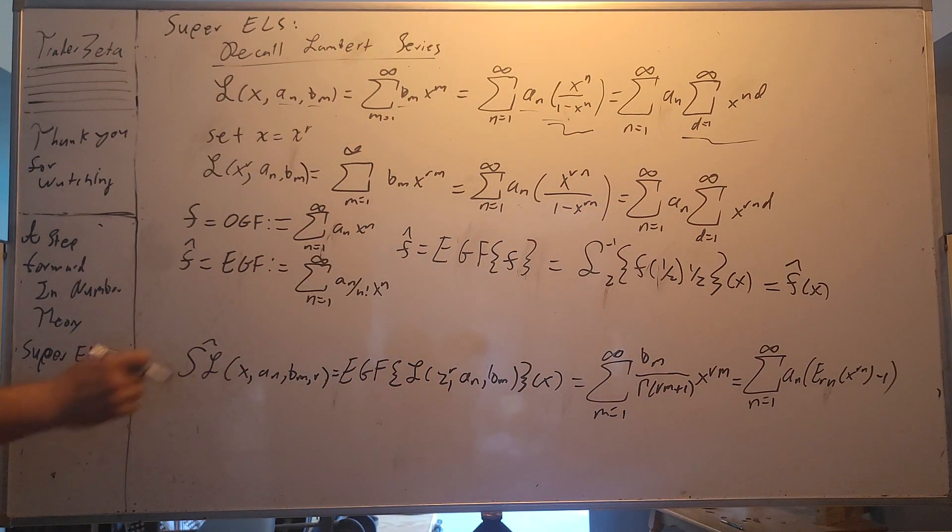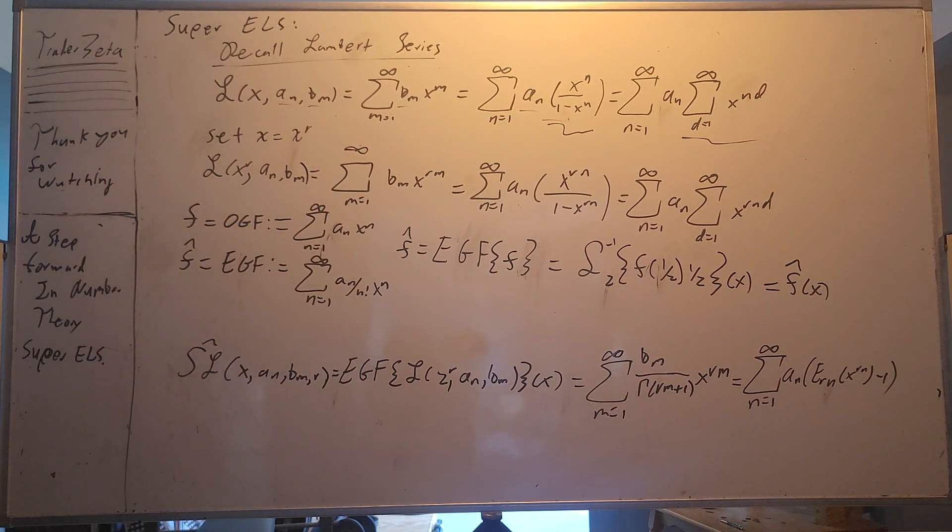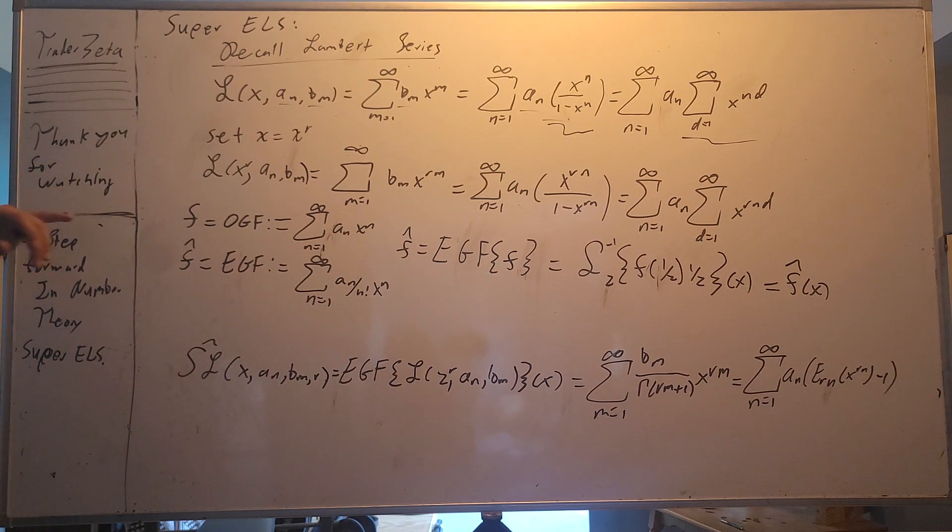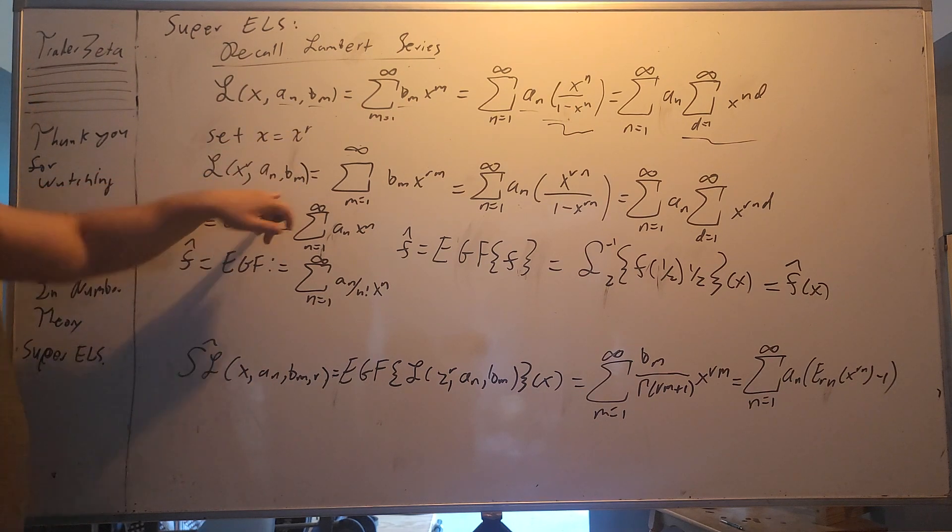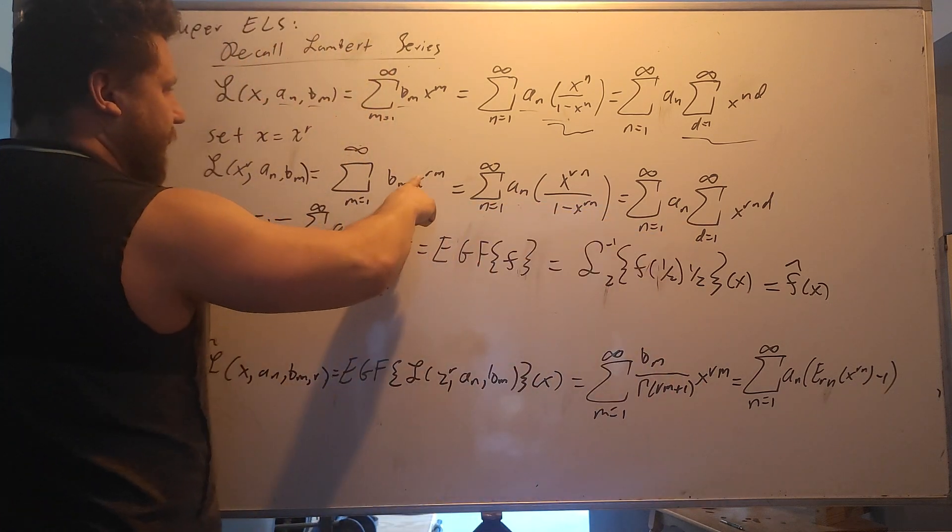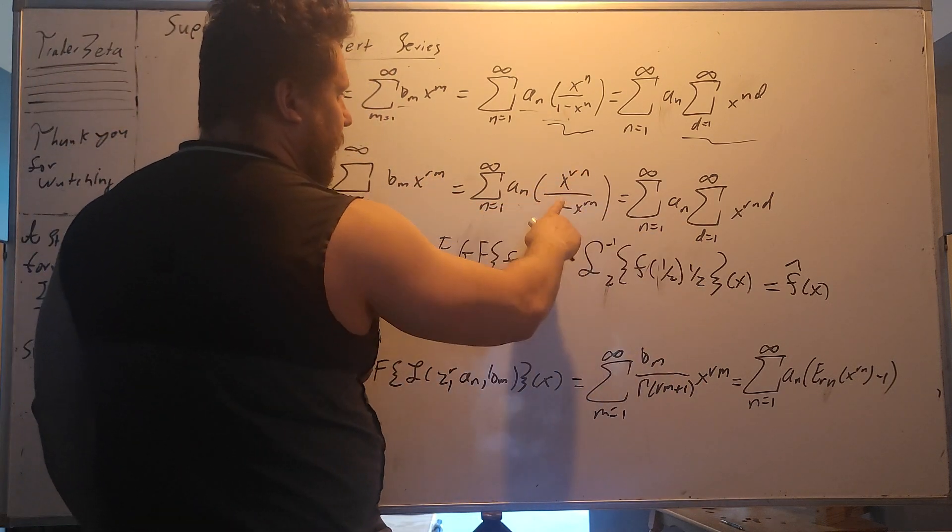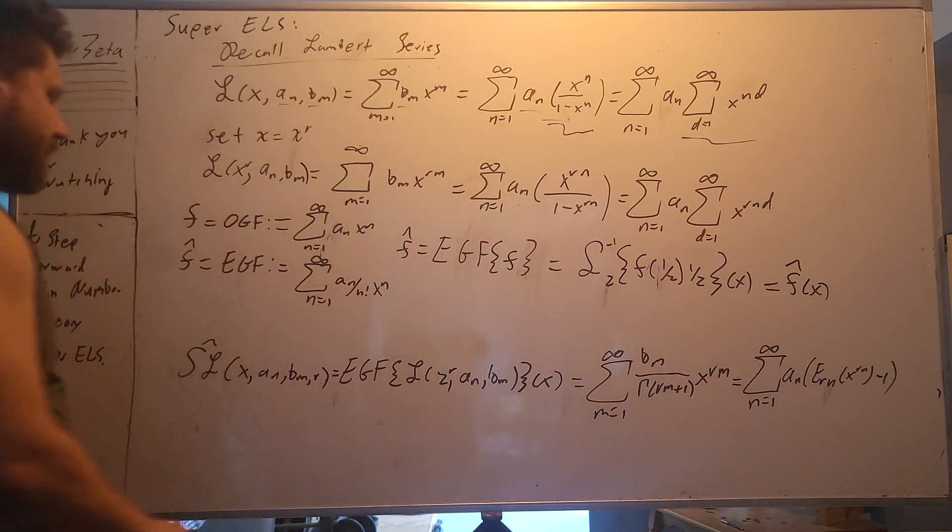Now what we're going to do, instead of directly doing an EGF transform like we do in the exponential Lambert series, we're going to parameterize x first. So we set x equals x to the r, and now we have this notation. Just for clarification, you have an x to the rn, x to the rnd.